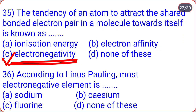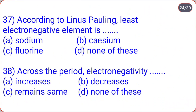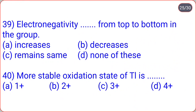According to Linus Pauling, the most electronegative element is fluorine with a value of 4.0. The least electronegative element is cesium with a value of 0.7. Across the period, electronegativity increases — option A. Electronegativity decreases from top to bottom in a group.